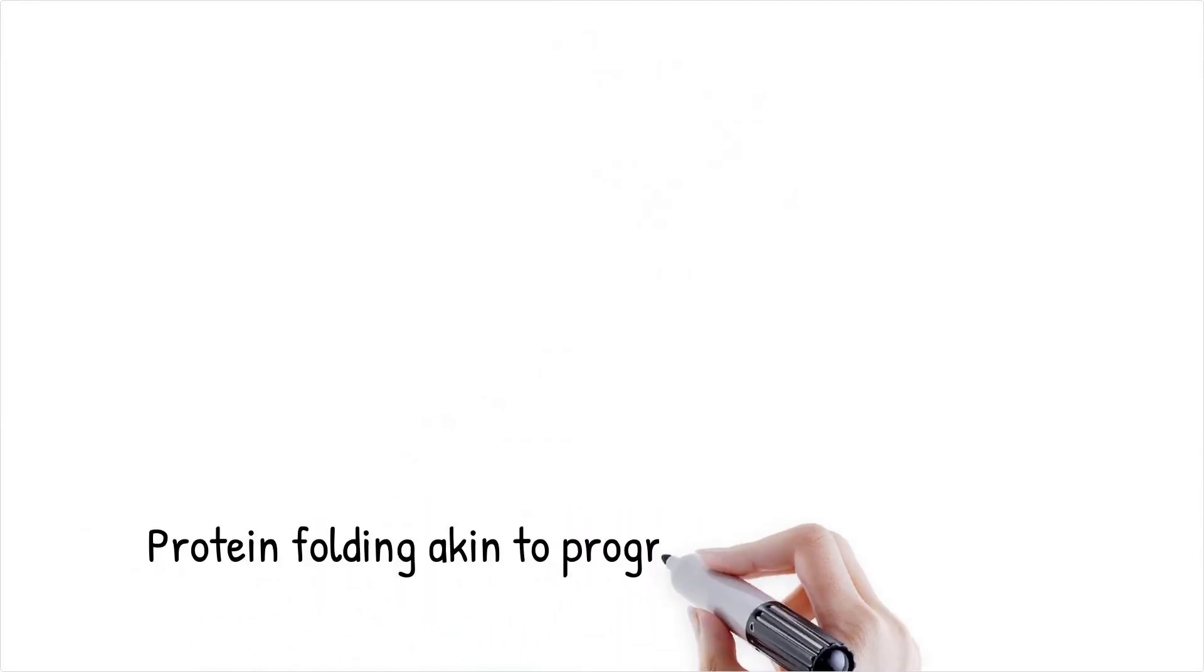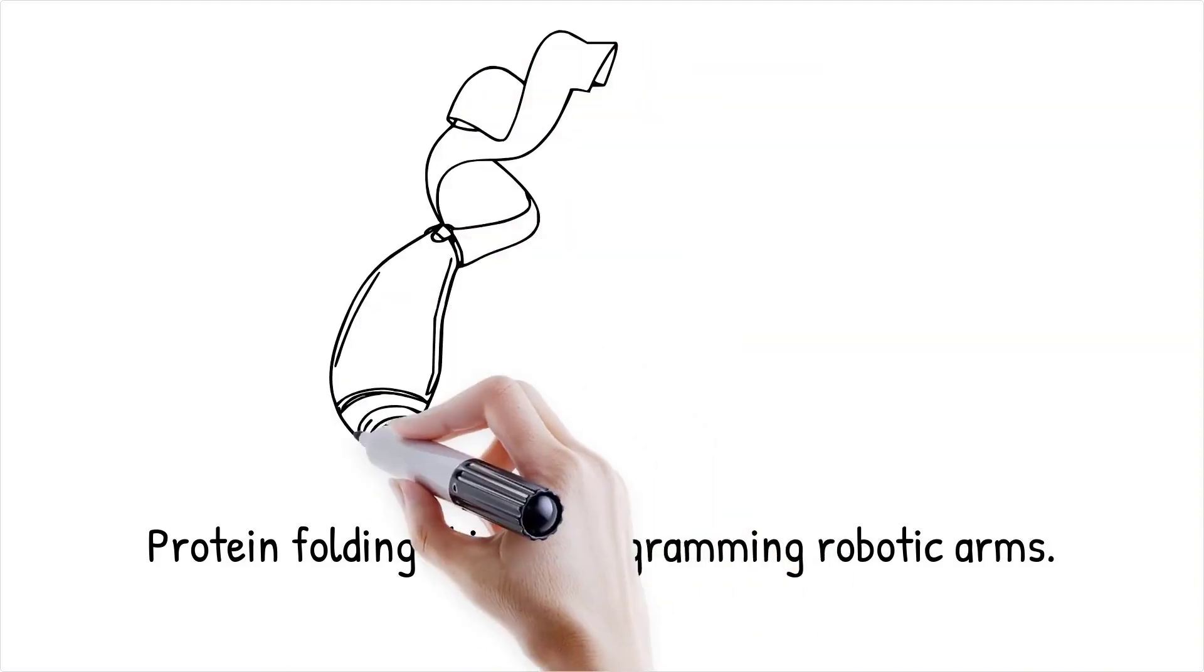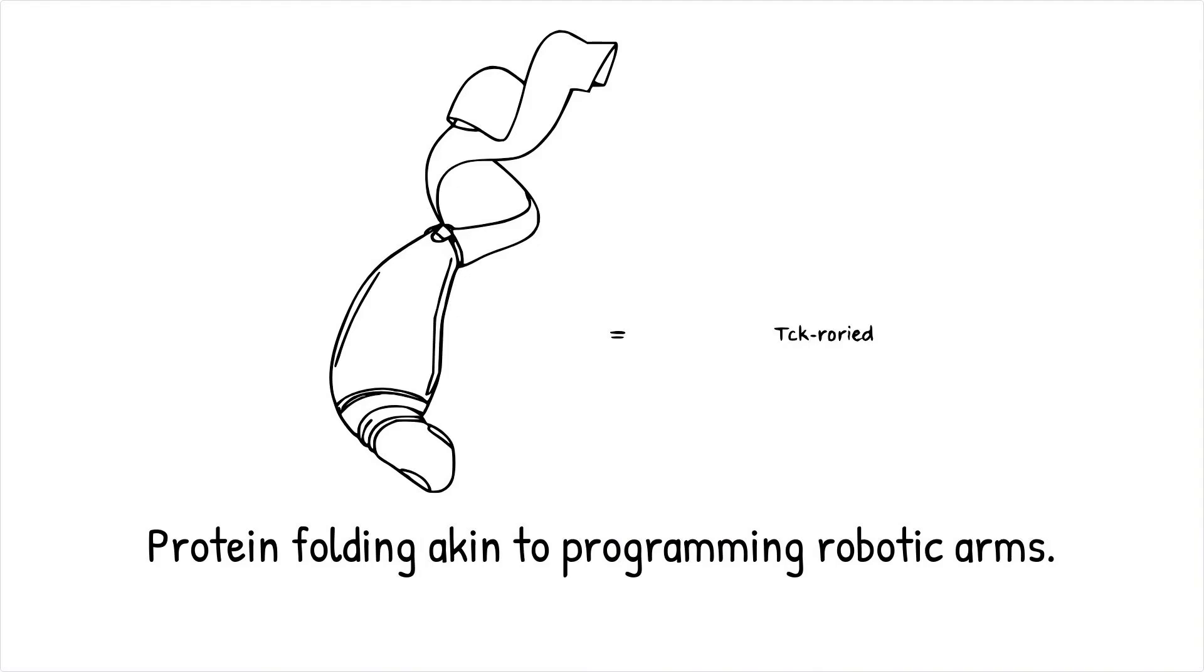Analogy: Protein folding is like programming a robotic arm. The sequence, amino acids, determines how the arm folds and operates to achieve specific tasks.